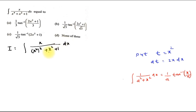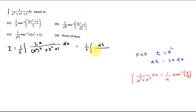Why do we write it this way? Because if we put t equal to x², the differentiation gives dt equal to 2x dx. So in the numerator we have x, and in order to get dt we must multiply by 2. As we multiply by 2, we divide the whole integral by 2. Let t equal to x², so this becomes one-half times the integral where 2x dx equals dt and the denominator part is t² + t + 1.